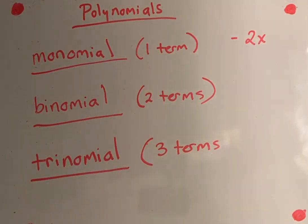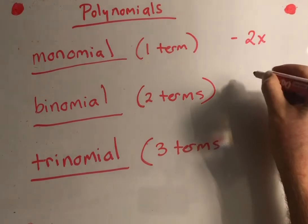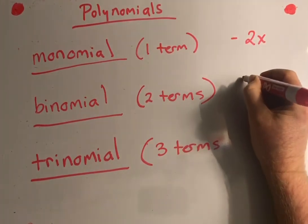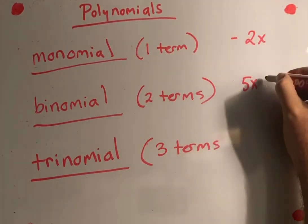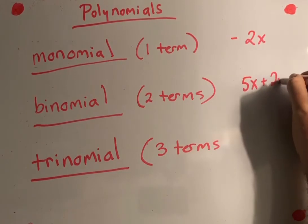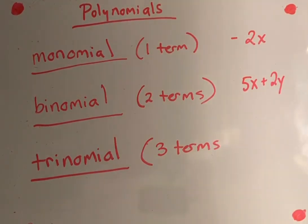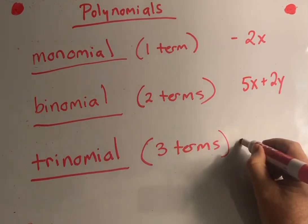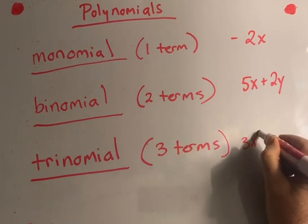An example of a monomial would be negative 2x. That is a monomial. A binomial would be 5x plus 2y, because there are two terms.